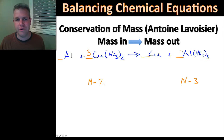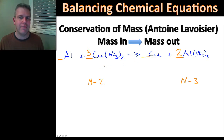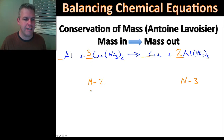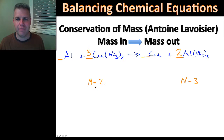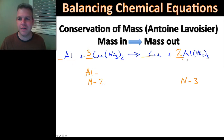To get six nitrogens on the aluminum nitrate side, I'll put a two in front of Al(NO₃)₃, because two times three gives me six nitrogens. Now I need to check everything else. Going back to aluminums: I have one aluminum on the left and now two aluminums on the right, so I need to write a two in front of aluminum on the left.